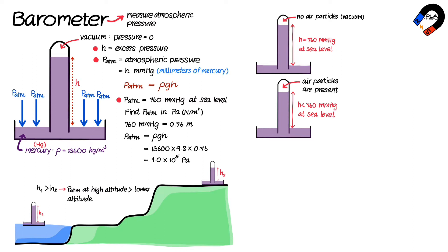For example, if we change from mercury to water: the density of mercury is 13,600 kilograms per cubic meter and the density of water is 1,000 kilograms per cubic meter.